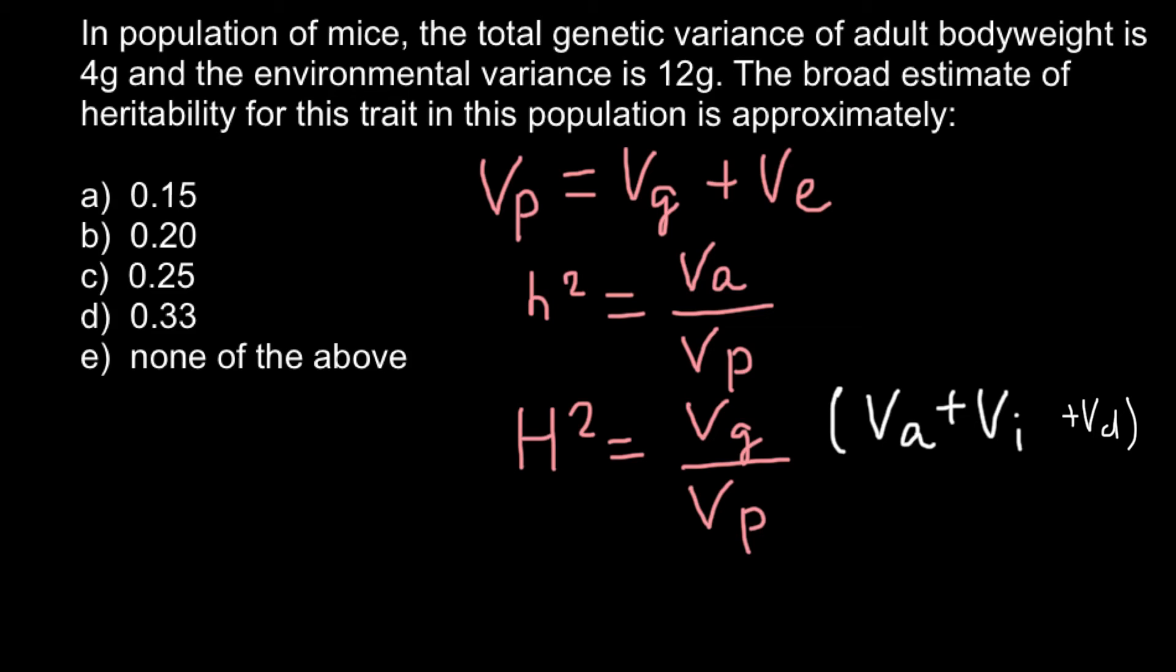Now we can solve our formula. First of all, we have to use this formula for our calculations. We have 4 grams total genetic variance, and this is going to be variance genetic. We also have variance due to environment that is 12 grams.